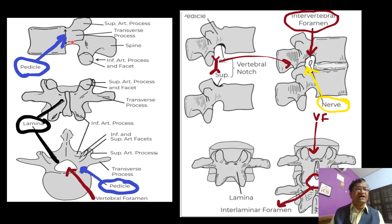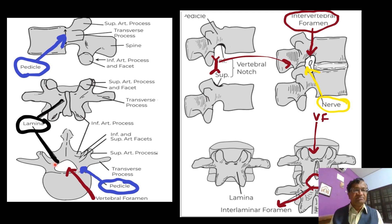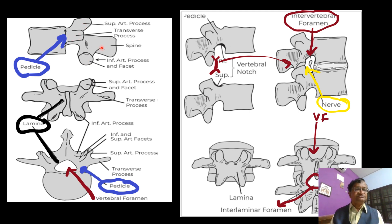Here you can see the vertebra — this is the pedicle, this is the superior articular process, here is the posterior part, and this is the inferior articular process with the lumbar anatomy.